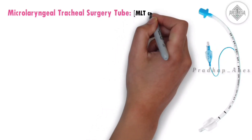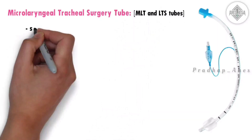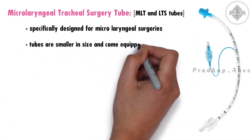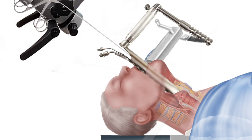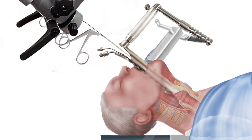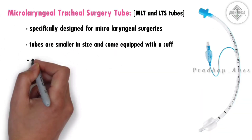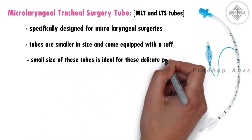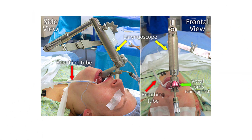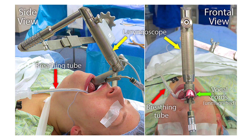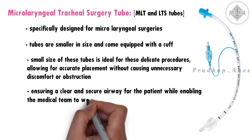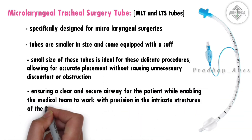Micro-laryngeal and laryngotracheal surgery tubes, known as MLT and LTS tubes, are specifically designed for micro-laryngeal surgeries. These tubes are smaller in size and come equipped with a cuff. During micro-laryngeal surgeries, which focus on the larynx, voice box, and nearby areas, precision is important. The small size of these tubes is ideal for these delicate procedures, allowing for accurate placement without unnecessary discomfort or obstruction, ensuring a clear and secure airway while enabling the medical team to work with precision in the intricate structures of the larynx and trachea.